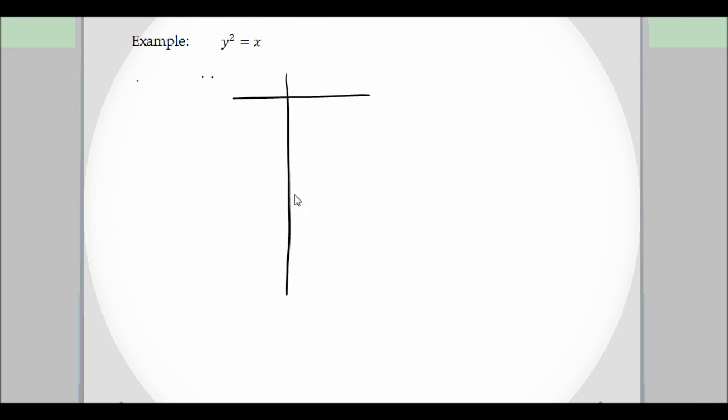So what would something have to look like to not be a function? Perfect example, and this is the one that we actually use almost all the time. Give me an x value. Well, you're not here with me. I will pick an x value. Let's pick four. So if x is four, what y values can this be? What y values can I get? It's basically, what could you square to get four?